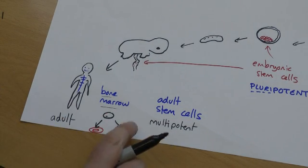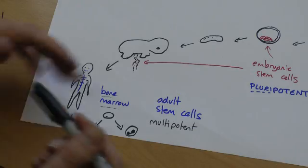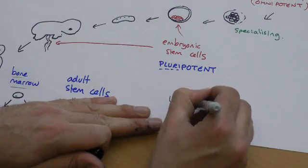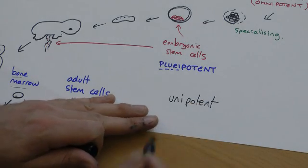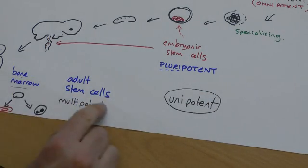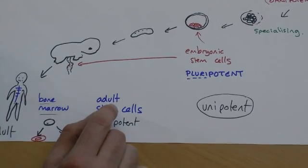So, they're multipotent. They can turn into a couple of things. Most of the cells in your body are what we'd call unipotent. They can only turn into one thing. So, there are some adult stem cells in your body, but there aren't many of them. There's not a lot.